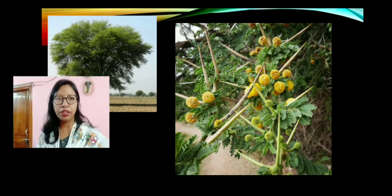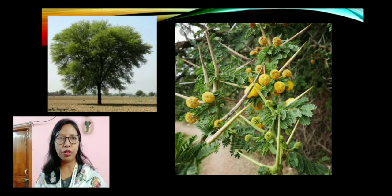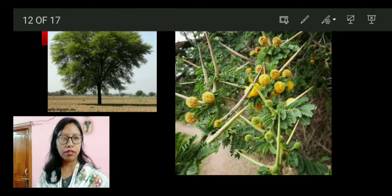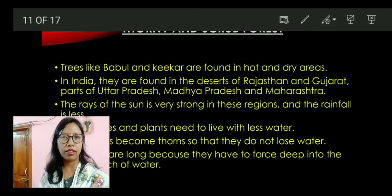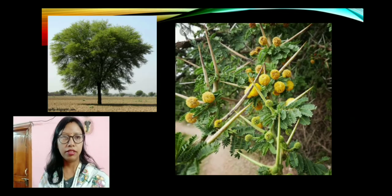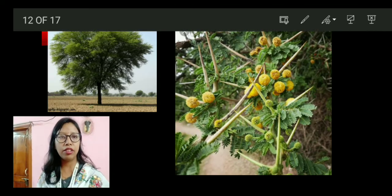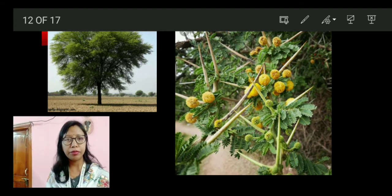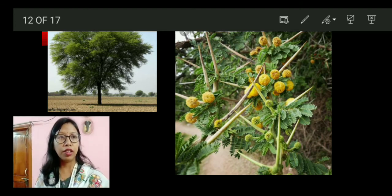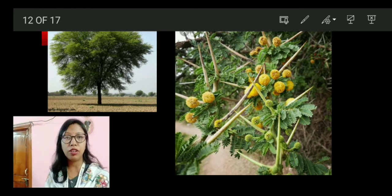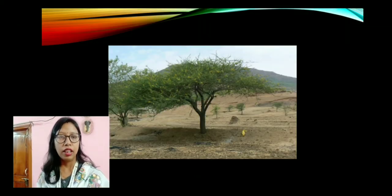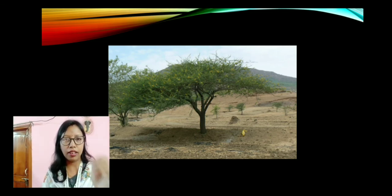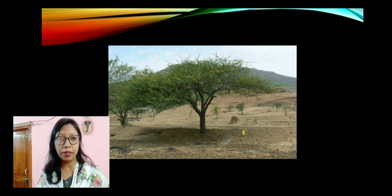Here are the pictures. The first tree is the Babul tree. If you see, this is how the leaves look. You can see these are thorns — these trees have leaves along with their thorns. This is the Kikar tree. As you can see, there are hardly any trees beside it, they are very far apart, and the land is also very dry.